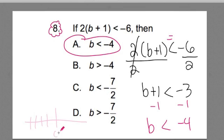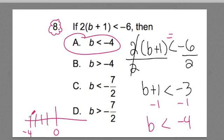Just a real quick sketch. There's my 0, that's negative 1, negative 2, negative 3, negative 4. This means that b is less than negative 4.